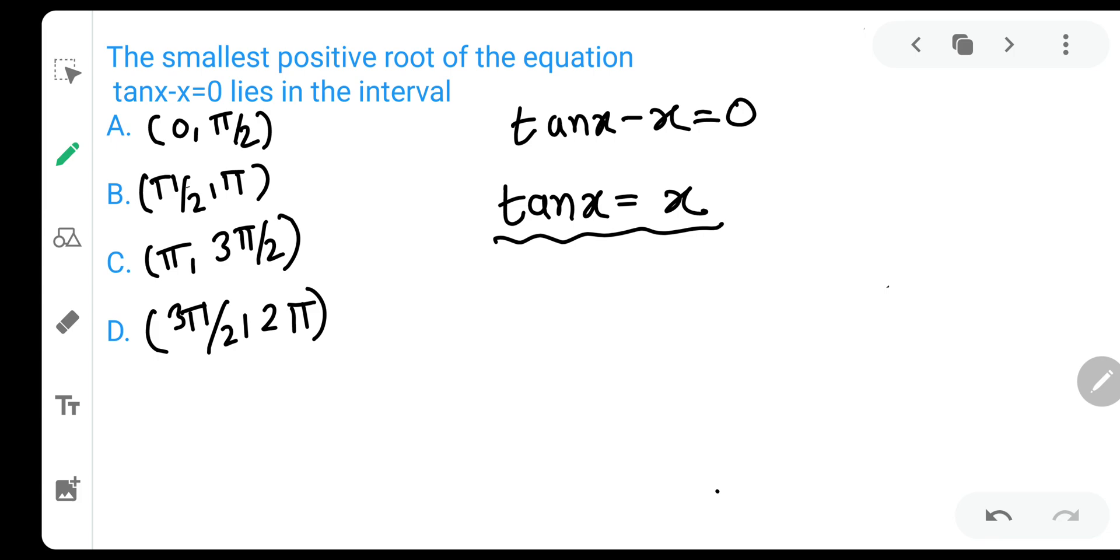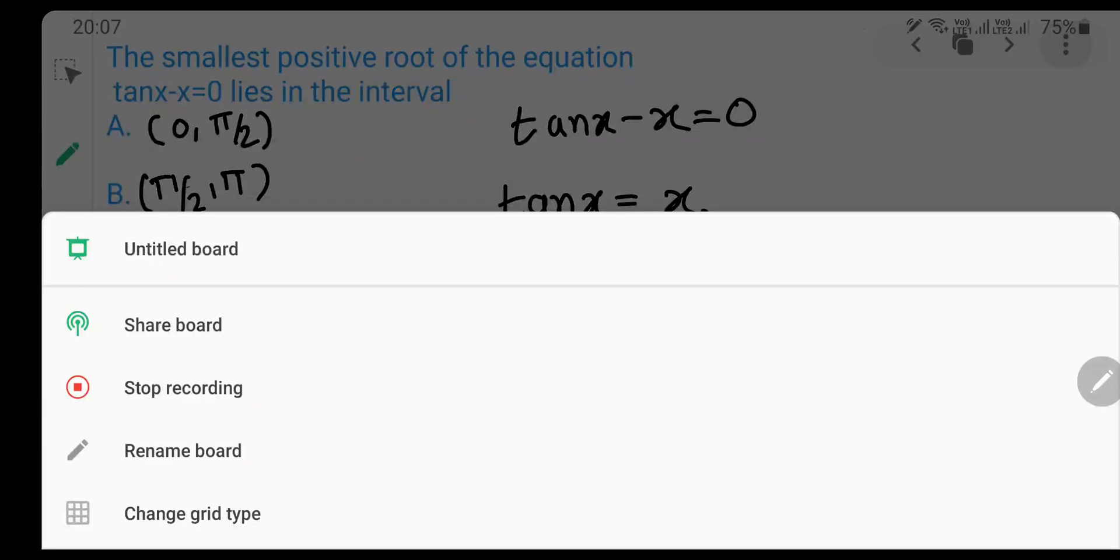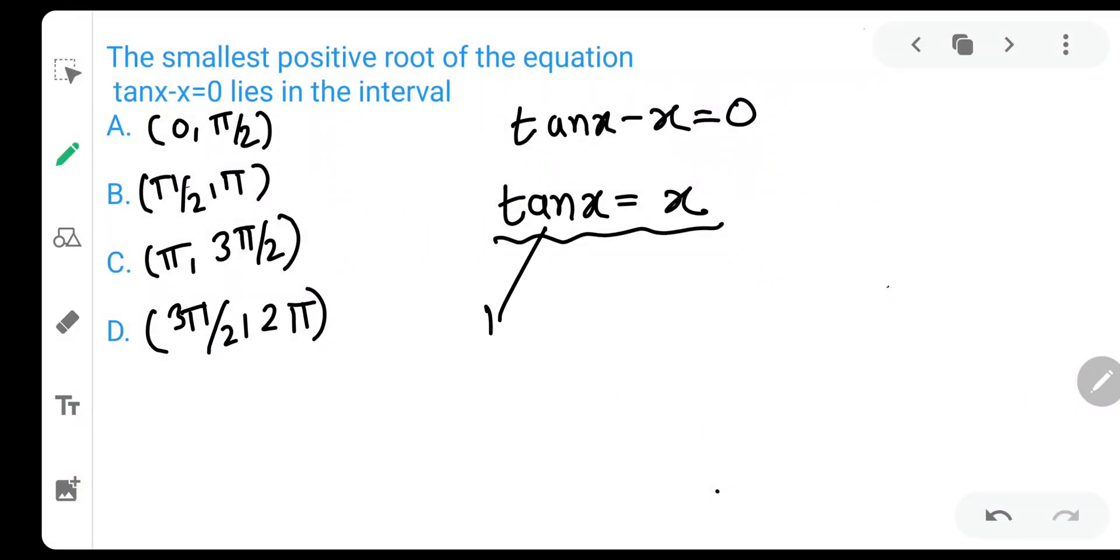We will get our value which is the root, which is nothing but the value of x. But the left-hand side is tan(x), we will draw the graph of tan(x), and the right-hand side is x, we will draw the graph of x on the same graph. They will be intersecting each other at some points, and those points are our answers.